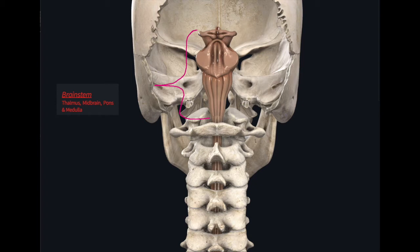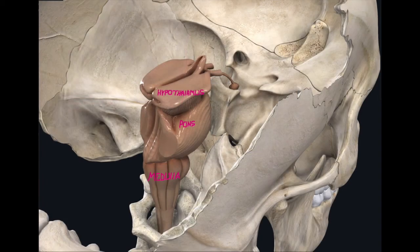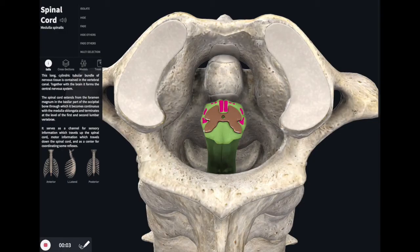The corticospinal tracts crossover in the medulla. They are collections of upper motor neuron fibers which go to the spinal cord controlling the motor function of the body. The corticospinal tract is comprised of a ventral and lateral tract.